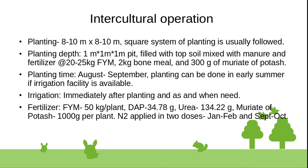Intercultural operations: planting distance is 8 to 10 meters by 8 to 10 meters in a square system of planting. Planting depth is 1 meter by 1 meter by 1 meter pit. The pit is filled with topsoil mixed with manure and fertilizer: 20 to 25 kg FYM, 2 kg bone meal, and 300 grams of muriate of potash.